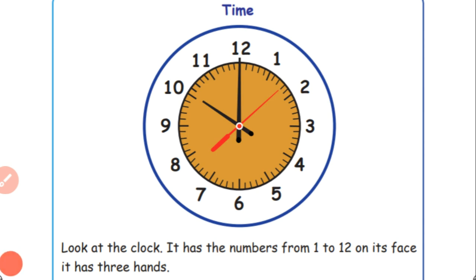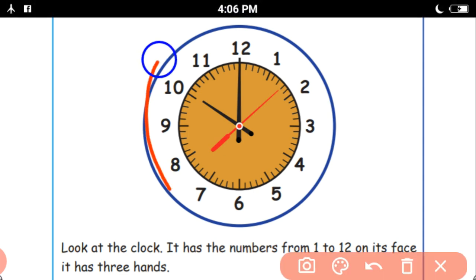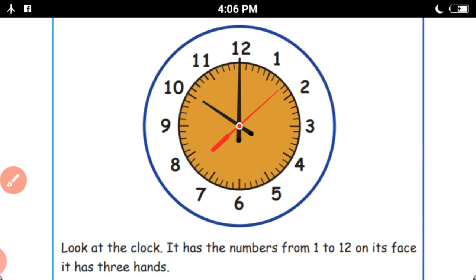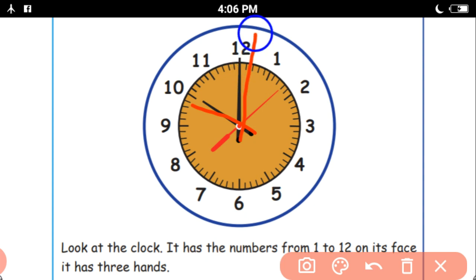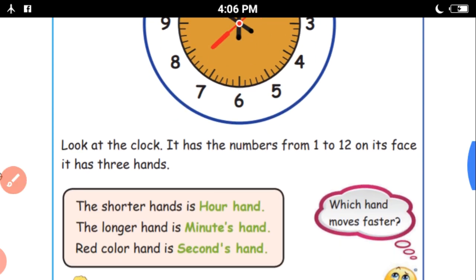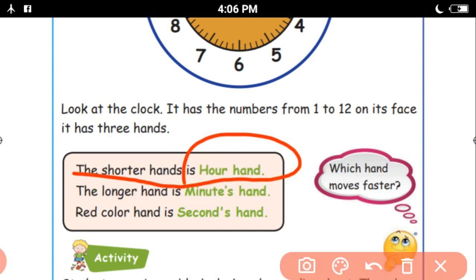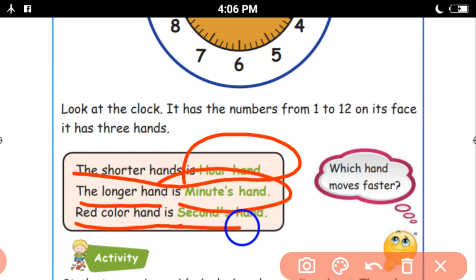Look at the clock. It has the numbers from 1 to 12 on its face. It has three hands. This is the hour hand. This is the minute hand. This is the seconds hand. The shorter hand is the hour hand. The longer hand is the minute hand. The red color hand is the second hand.